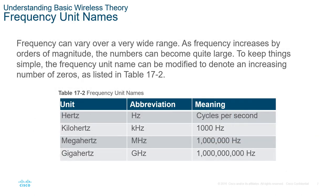Since hertz is the base unit of measurement, we also have kilohertz, megahertz, gigahertz, and so forth — all using that base hertz frequency. Each step increases by a factor of one thousand. So hertz to kilohertz is one thousand, megahertz is another thousand times kilohertz, and gigahertz is a thousand times megahertz, and so forth.